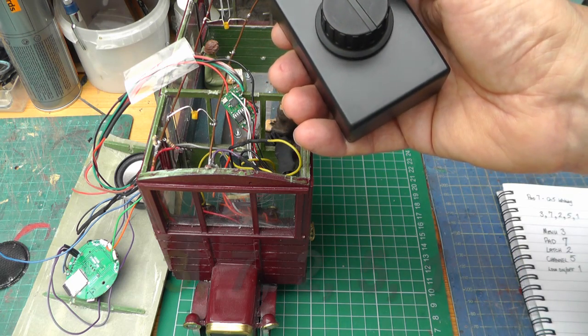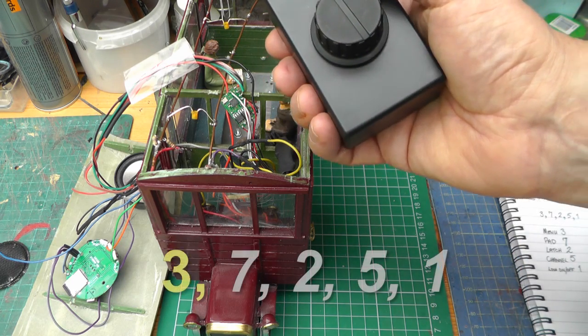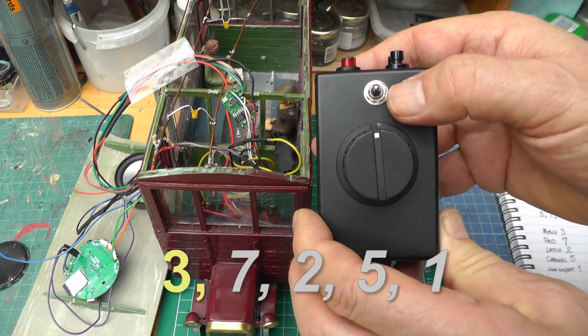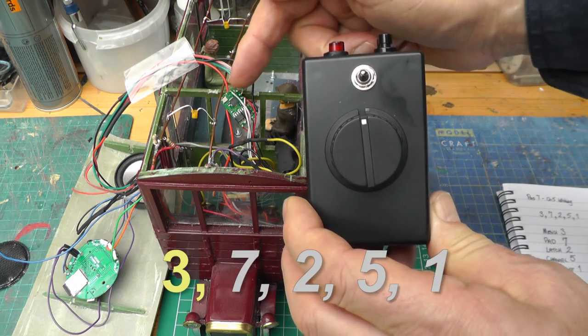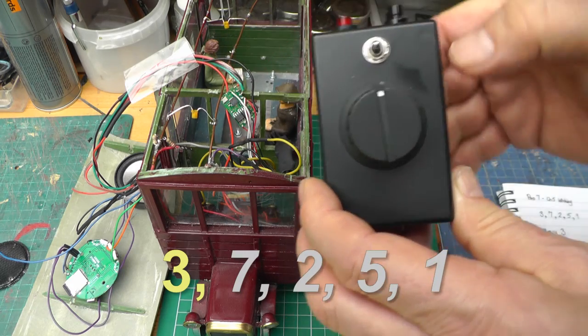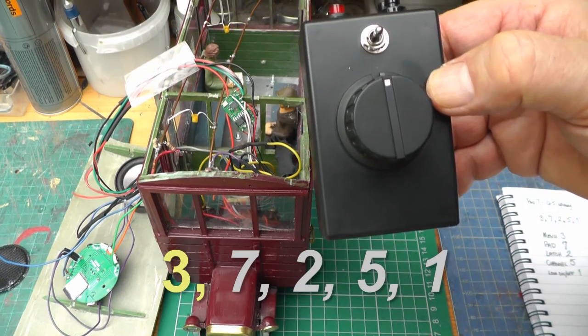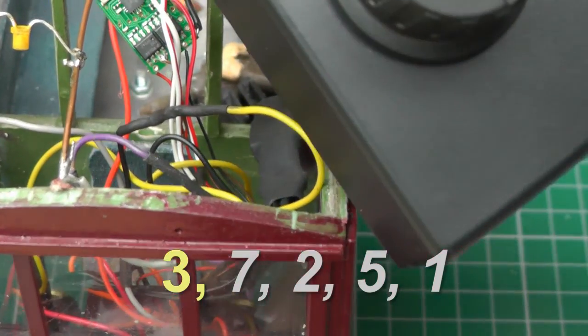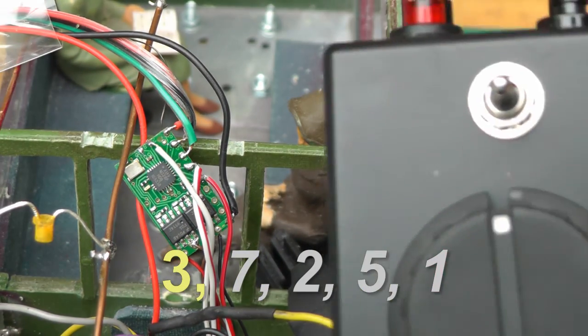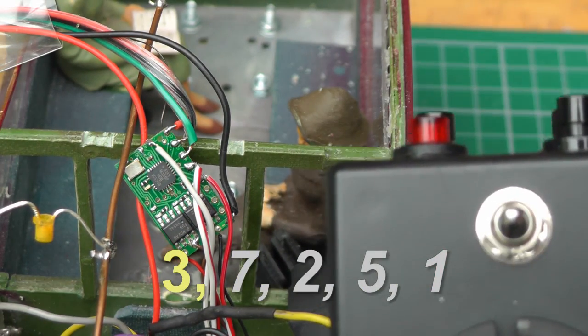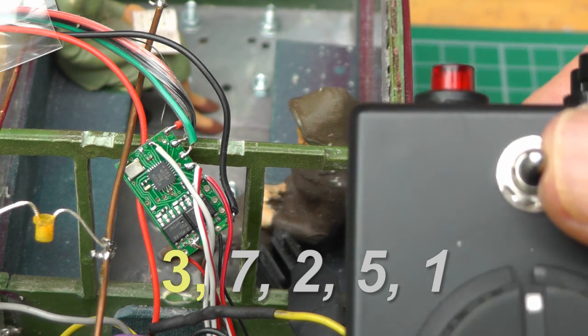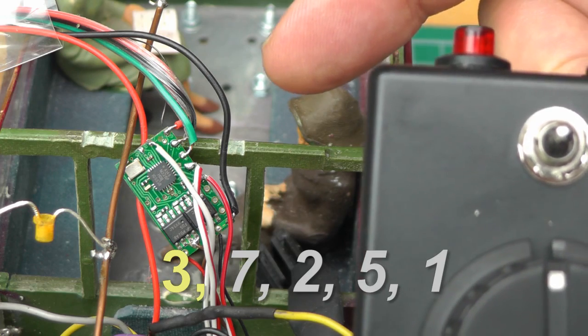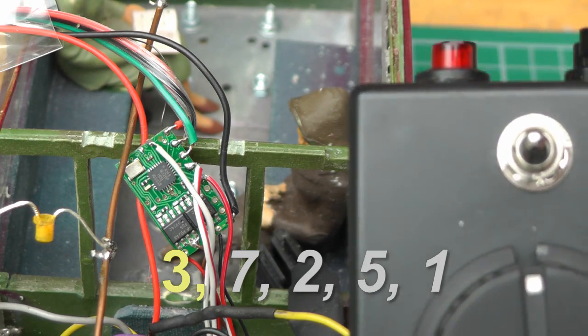I want it to be menu 3. So if I move the direction switch this way, it now flashes 2. So it's now flashing twice. Do it again. 1, 2, 3. It's flashing 3 times. So that's what I want.